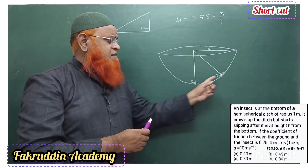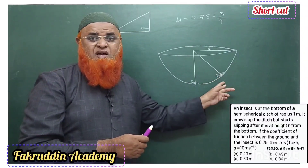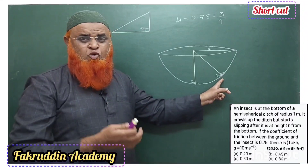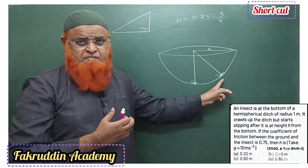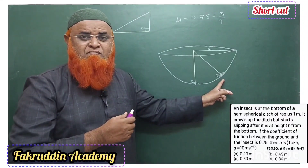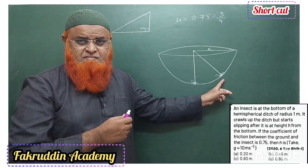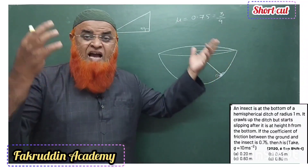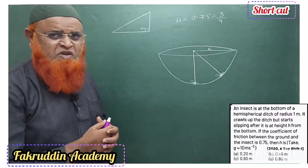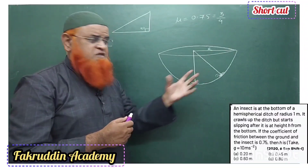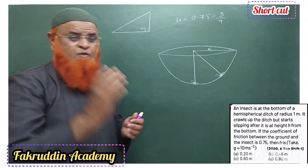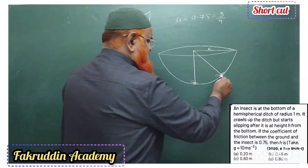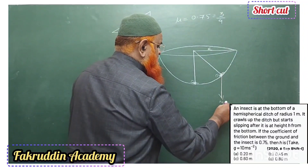Every time the insect goes up to a certain point and comes back down. Up to that point it is able to balance itself — there is equilibrium. Beyond that point it is unable to balance itself. How many forces are acting on the insect when it reaches that position? One is mg acting downwards.